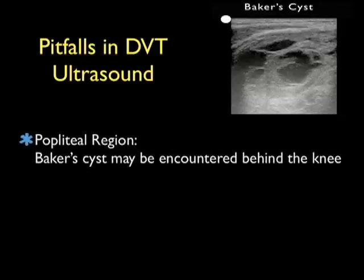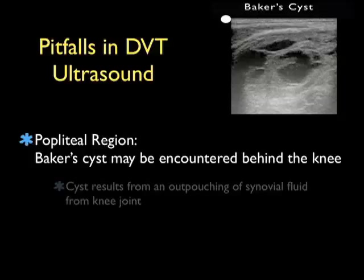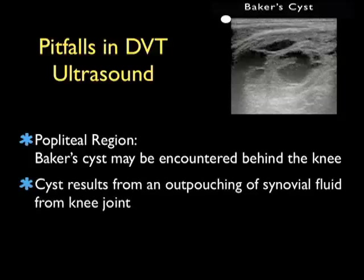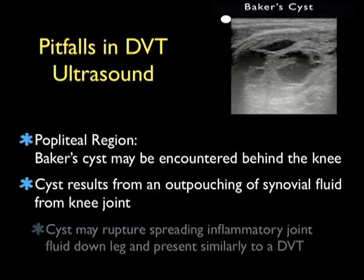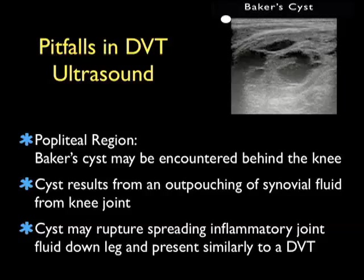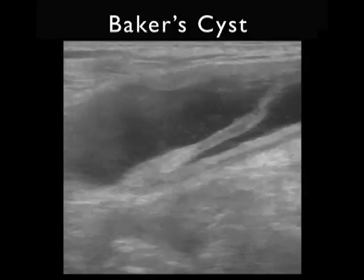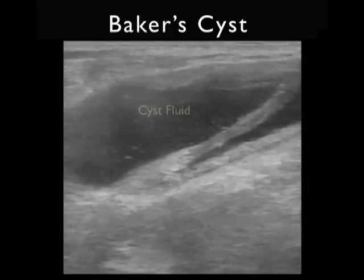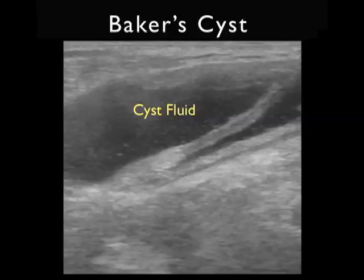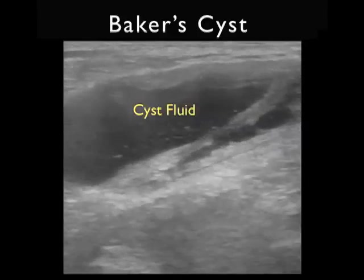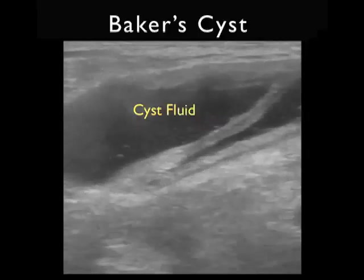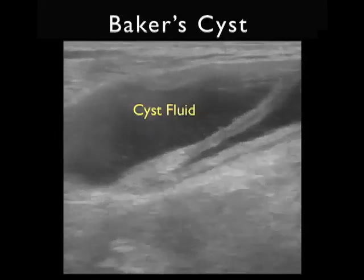As we progress down the leg we can encounter another potential pitfall within DVT ultrasound — the alternative finding of a Baker's cyst. A Baker's cyst can be encountered just behind the knee within the popliteal region. This cyst can result from an outpouching of synovial fluid from the knee joint, usually in patients with advanced arthritis. Unfortunately, a Baker's cyst can rupture, spreading inflammatory joint fluid down the leg and presenting very similarly to a DVT. This video clip demonstrates the typical appearance of an unruptured Baker's cyst found in the popliteal region of a patient referred to the emergency department for swelling behind the knee. We see the typical appearance of a cyst — a dark or anechoic fluid collection on bedside sonography.